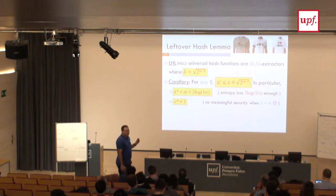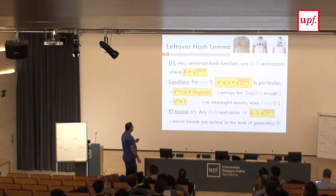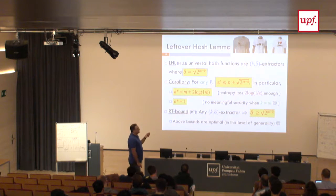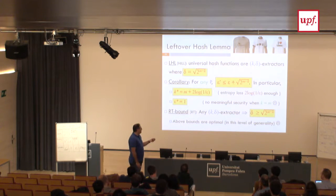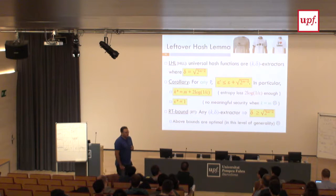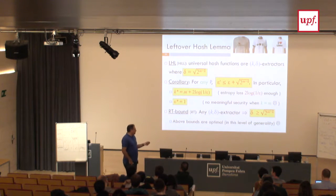There is an annoying but correct result by Radhakrishnan and Ta-Shma, which says it's not just a problem with the universal hash function — for any extractor for any source of entropy k, the error must be at least this bound. So the leftover hash lemma is optimal: you cannot beat it. At this level of generality, if you want to extract something statistically close to uniform, you must pay this price.